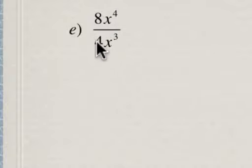Now here, this is dividing monomials, and when we divide monomials, we divide the coefficients. And to divide powers with the same base, we keep the base the same and subtract the exponents.